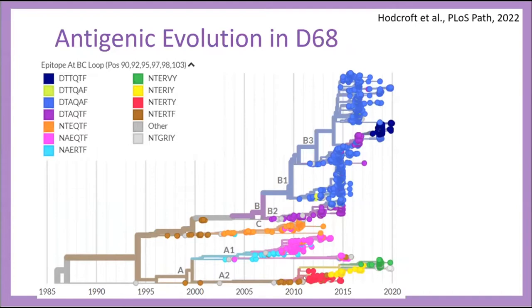In particular, in this tree I've colored it by the epitope at the BC loop at the most sticky-out positions, and the different colors represent how that epitope has changed over time. You can really see that the A1 and A2 clades down here at the bottom have had a number of changes in the last few years, with A2 in particular having a really quite rapid turnover and almost ladder-like-looking evolution. This is also the clade associated with those infections in the older 60-to-80-year-old age group.